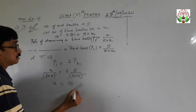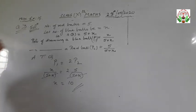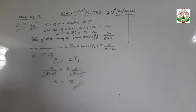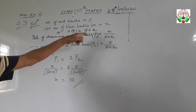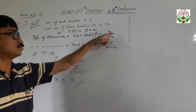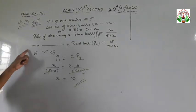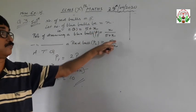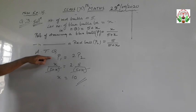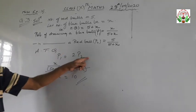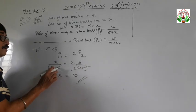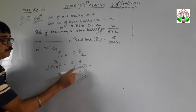So X equals 10. To summarize: number of red balls is 5, number of blue balls is X, and total balls is 5 plus X. Probability of blue ball is X upon 5 plus X and probability of red ball is 5 upon 5 plus X. Since probability of blue is double that of red, X upon 5 plus X equals 2 into 5 upon 5 plus X. The denominator cancels, giving X equals 10.